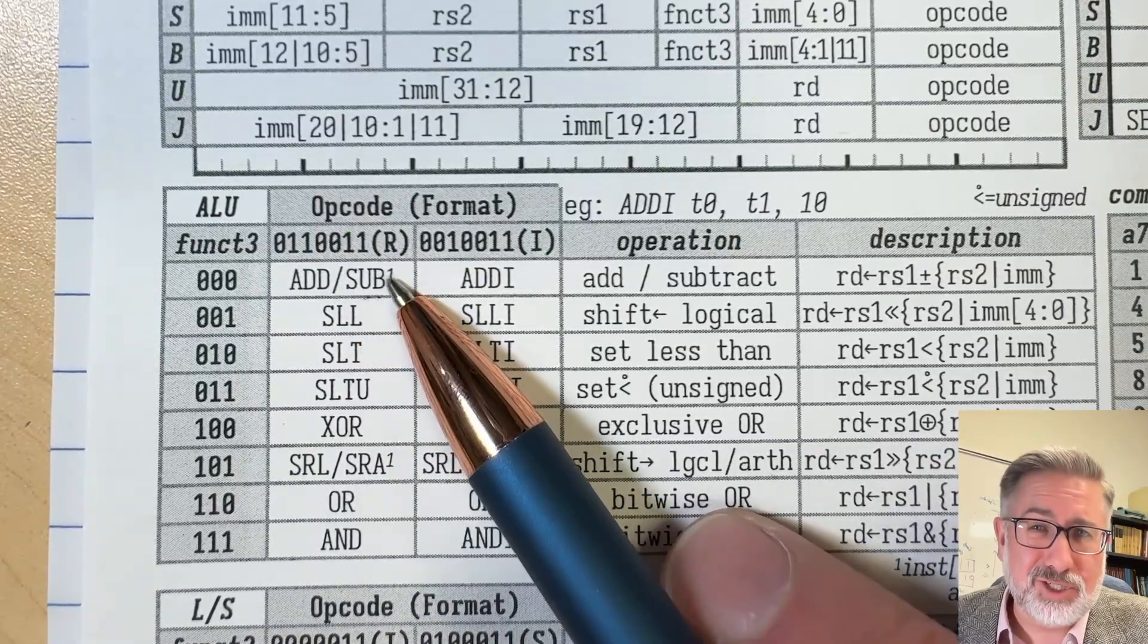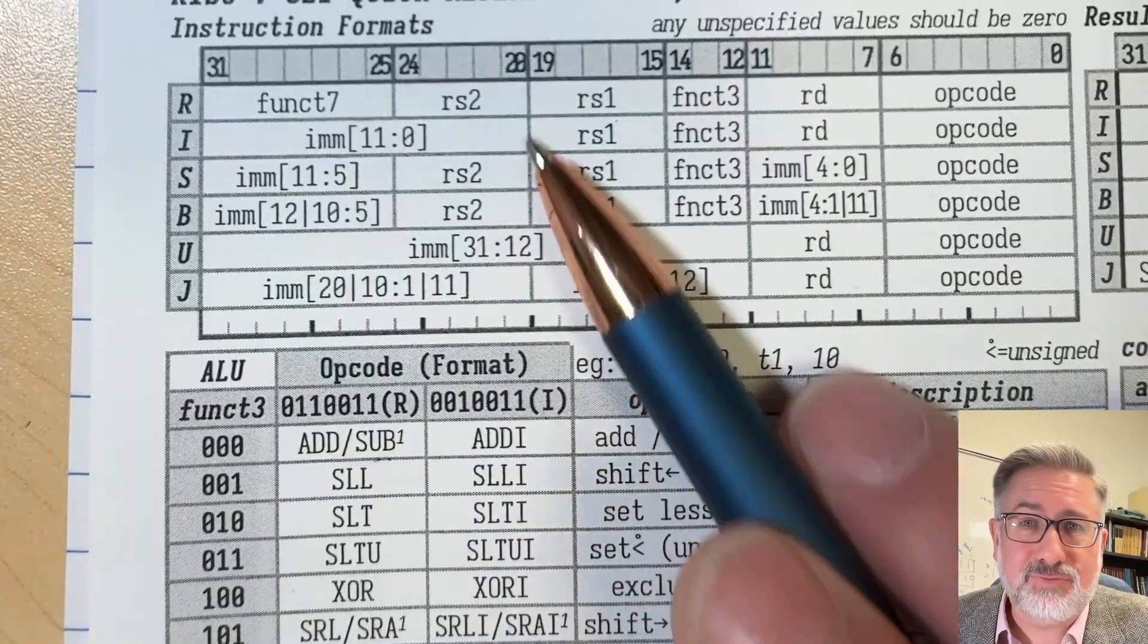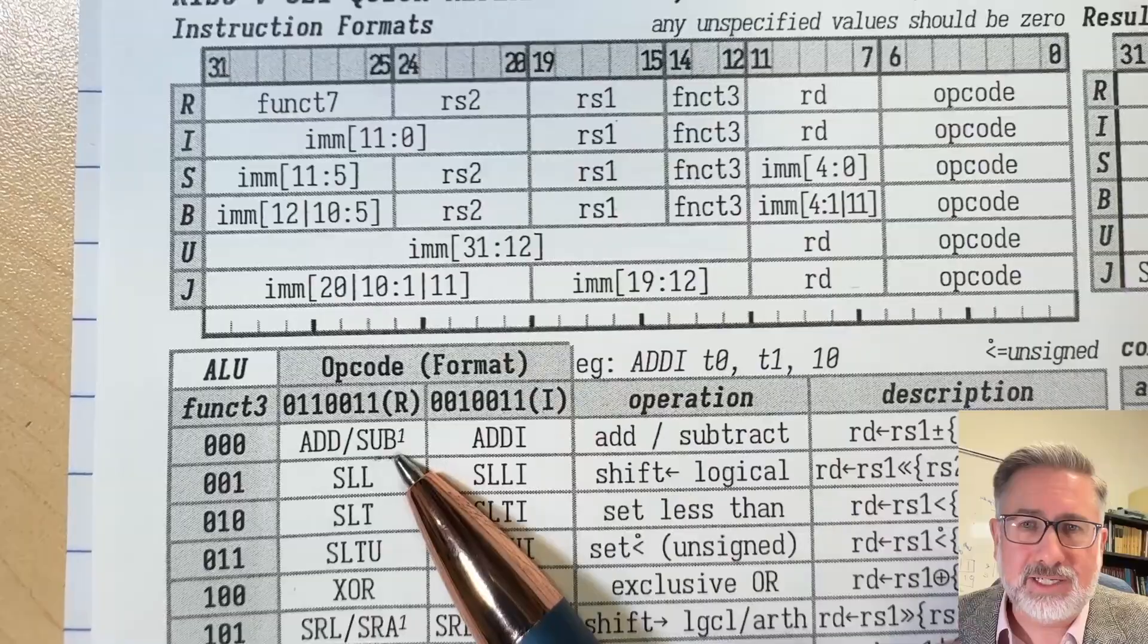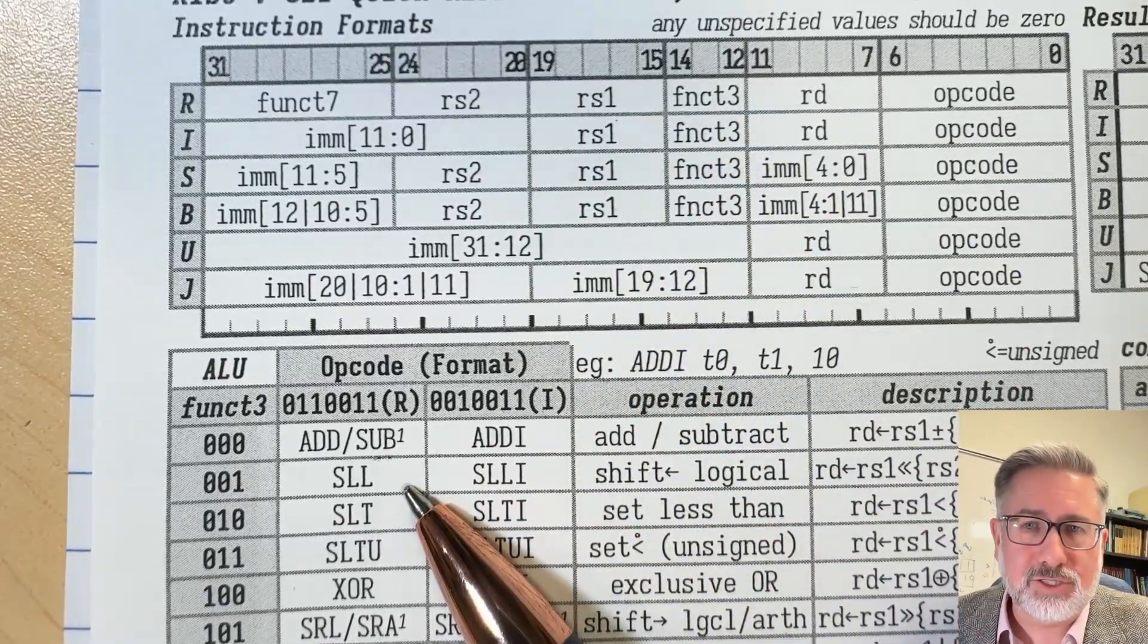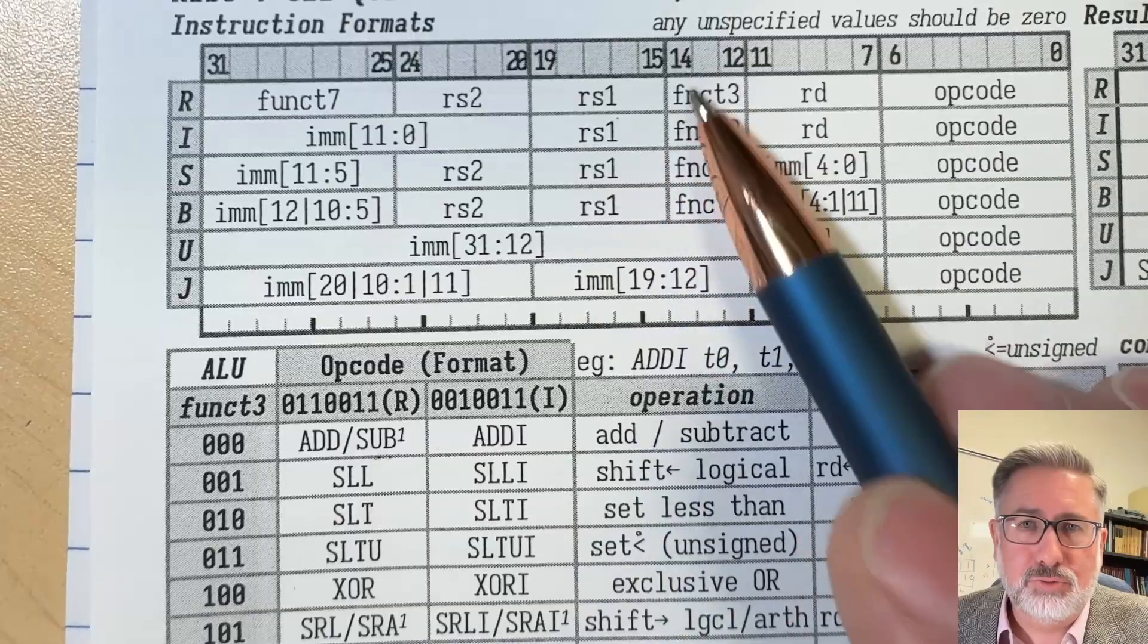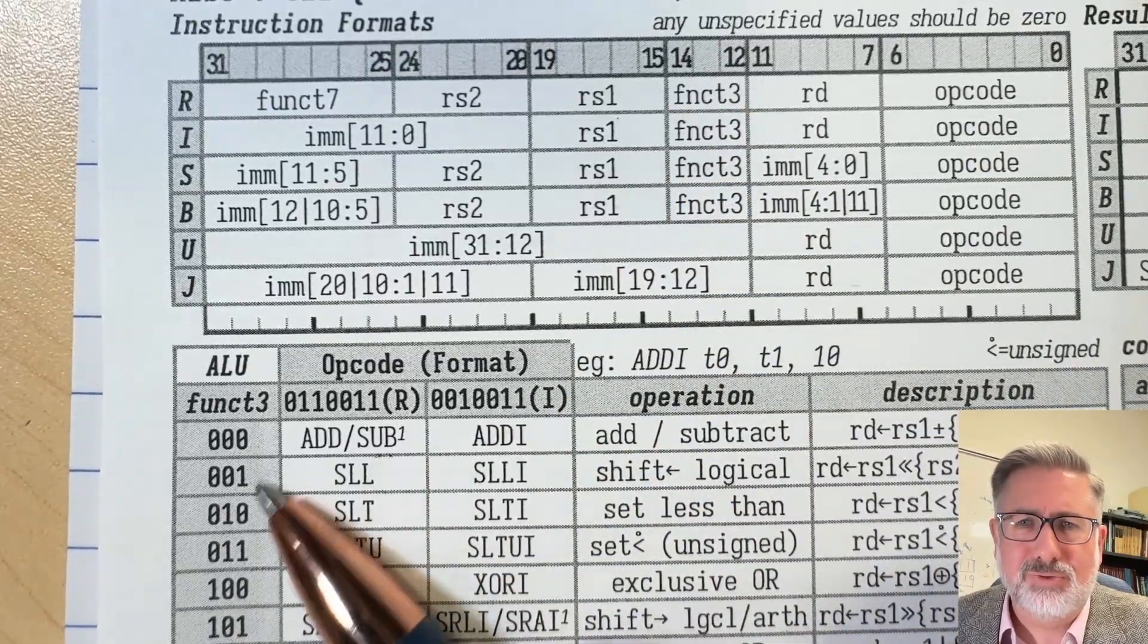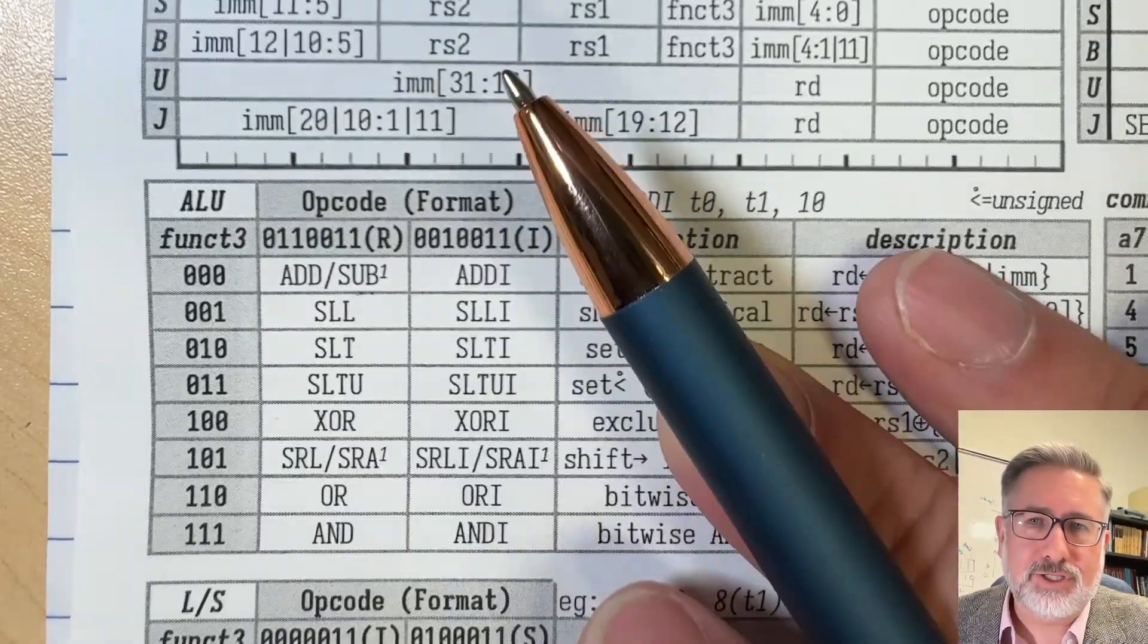Why you see two options here, we'll talk about in a second. But basically, if these three bits, function 3 here, are 000, then we're adding and subtracting. If it's 001 here, then we're shift left logical. If it's 002 here, then we set less than, etc. 002, 010. These three bits tell us what functions we can do.